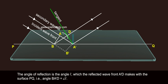The angle of reflection is the angle I' which the reflected wave front A'D makes with the surface PQ, that is angle BA'D.